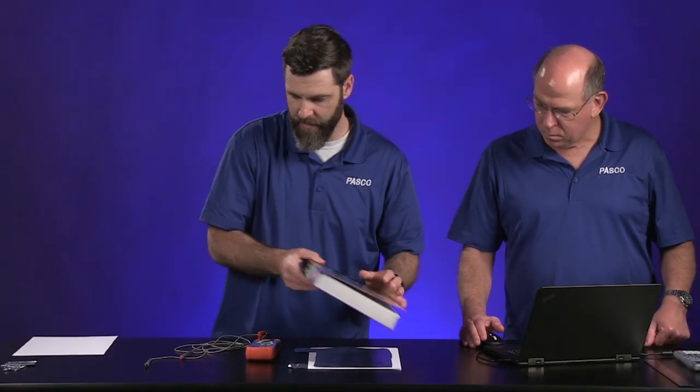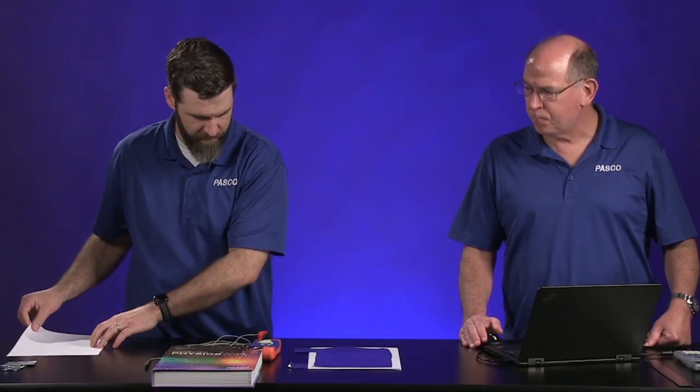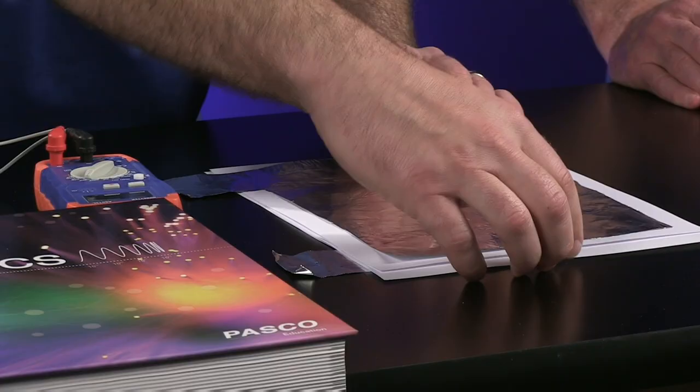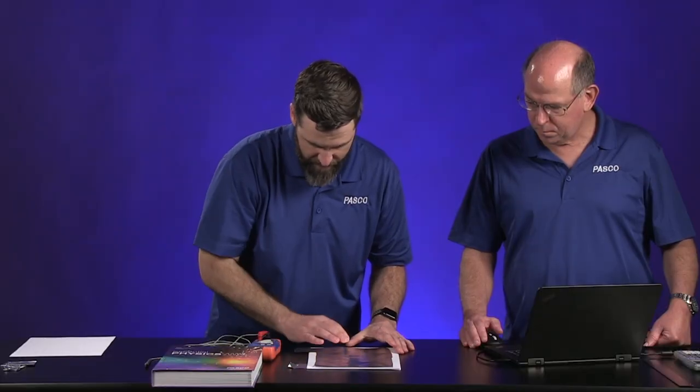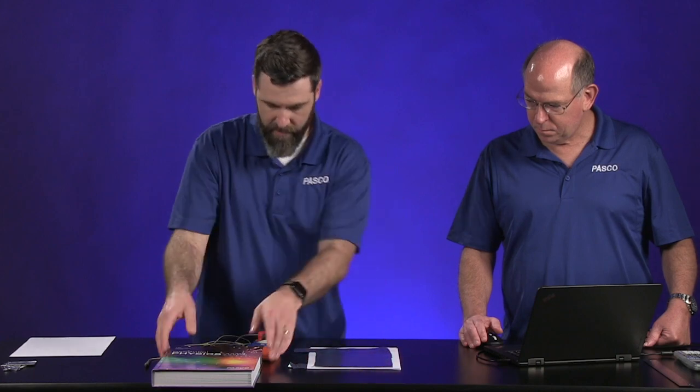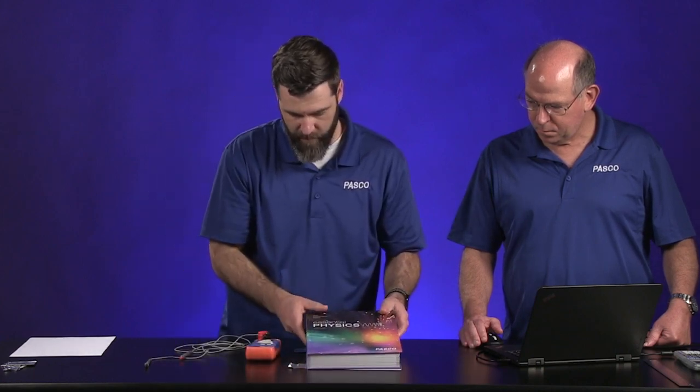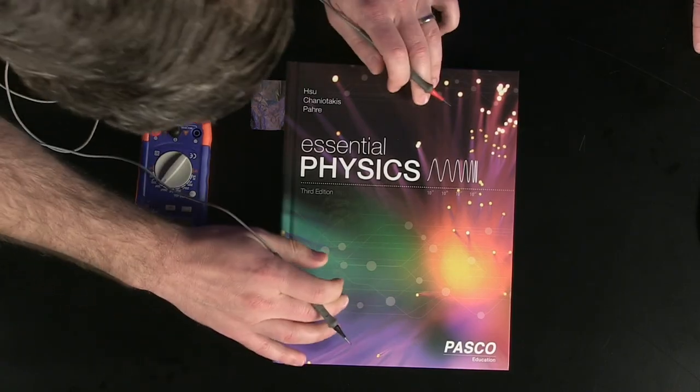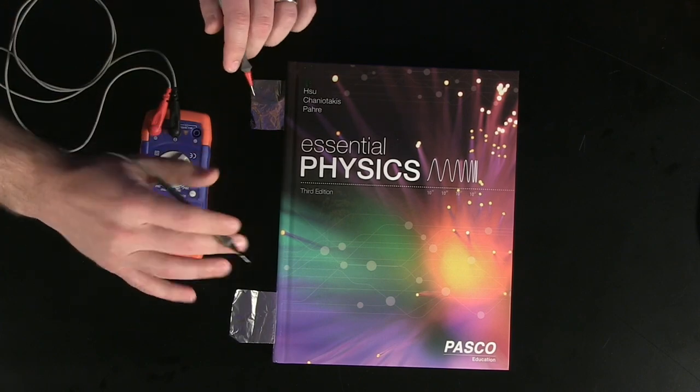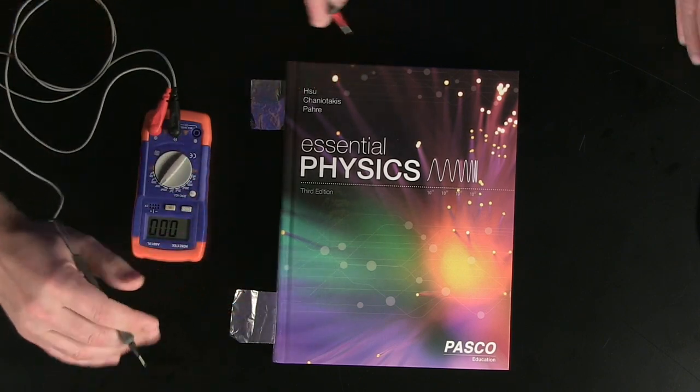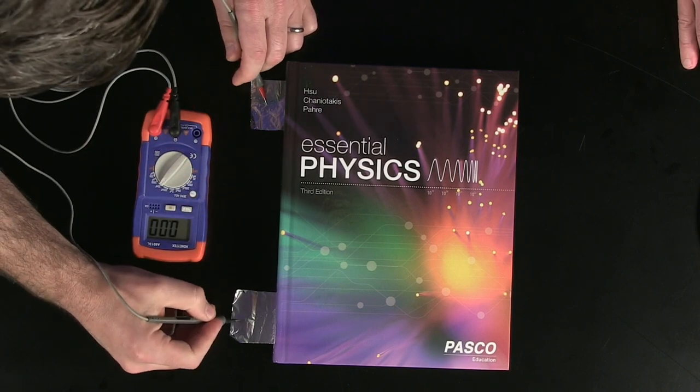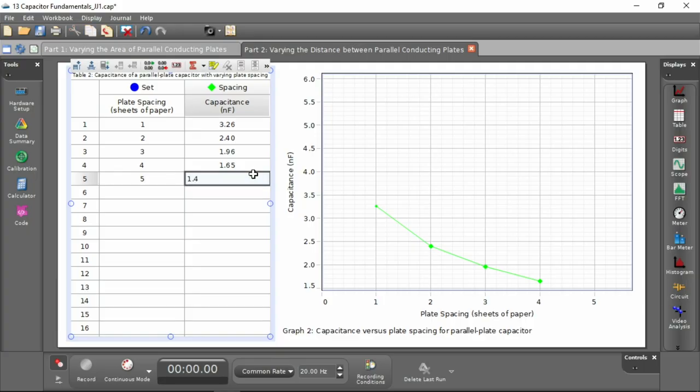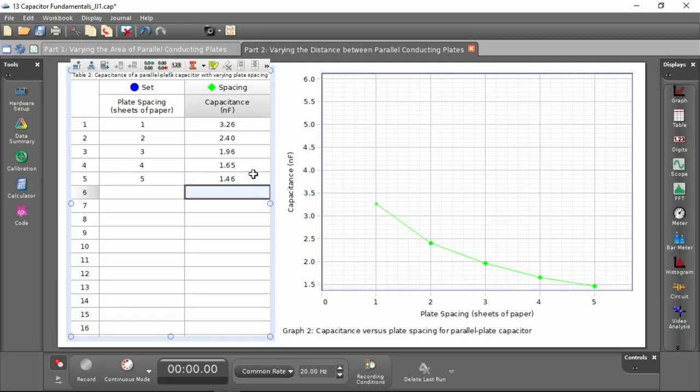All right. And now, is this our last data point? Yeah. Okay. So five sheets of paper. So the spacing between our plates now is five times what our very first data point was. Let me put this book on there. And that capacitance is 1.46. So definite downward trend.